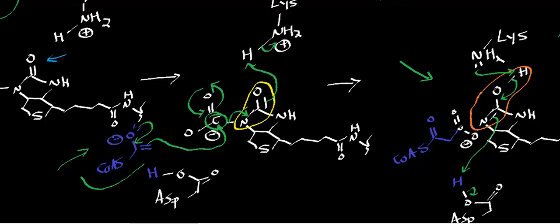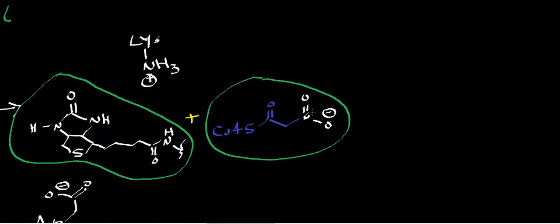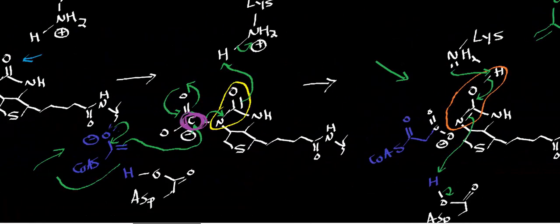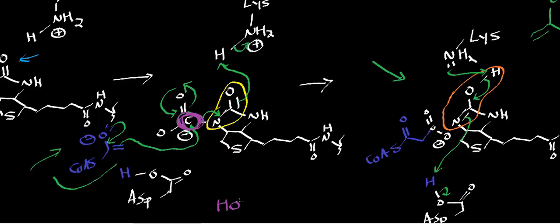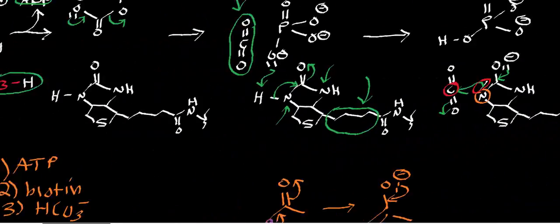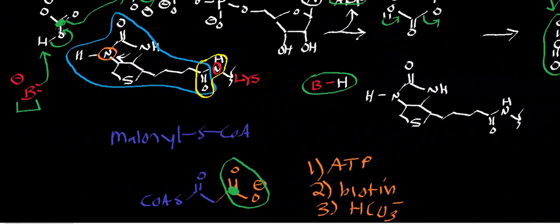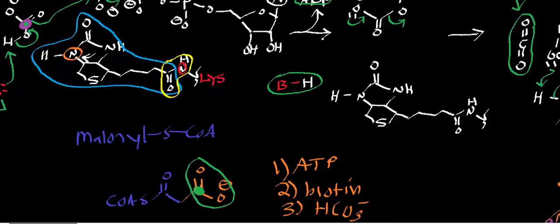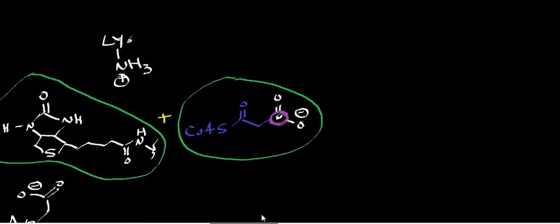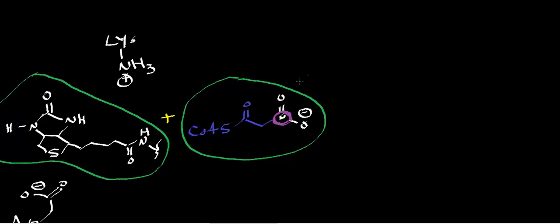This carbon here — highlighted in purple — is the one that came from bicarbonate in the initial step when we activated bicarbonate using ATP. If we track that carbon through the end of this mechanism, it winds up as the carboxylate carbon of malonyl-CoA.